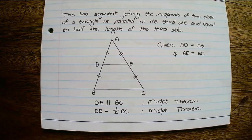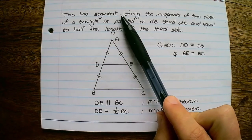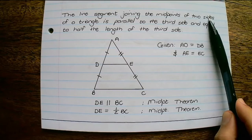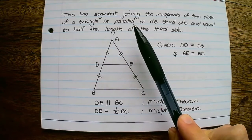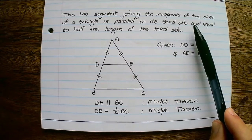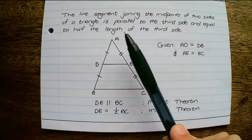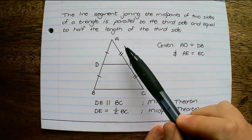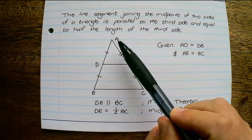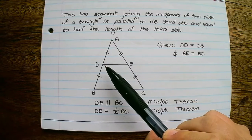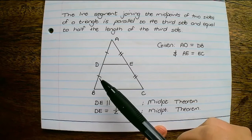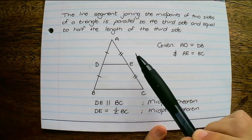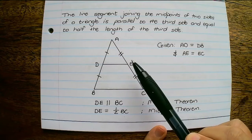The midpoint theorem says the line segment joining the midpoints of two sides of a triangle is parallel to the third side and equal to half the length of the third side. What we are given is that line AD is equal to line DB, and line AE is equal to line EC.